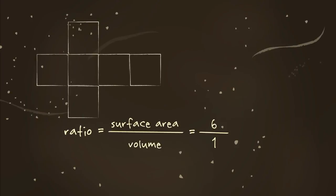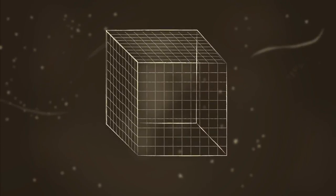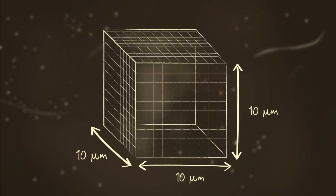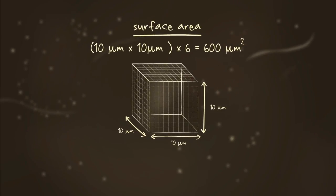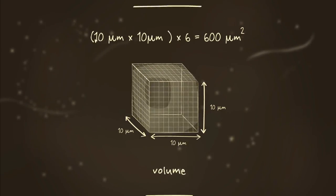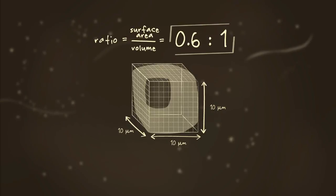This would give us six units of surface area for every single unit of volume, a six-to-one ratio. But things change dramatically if we make the cube ten times bigger, measuring ten micrometers on each side. This cell would have a surface area of six hundred square micrometers and a volume of one thousand cubic micrometers, a ratio of only 0.6 to one.